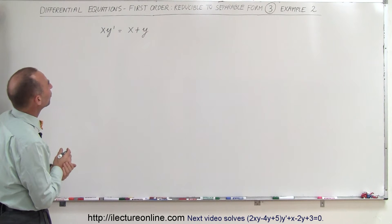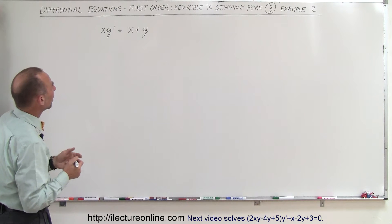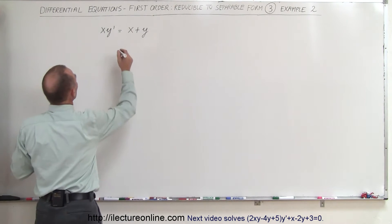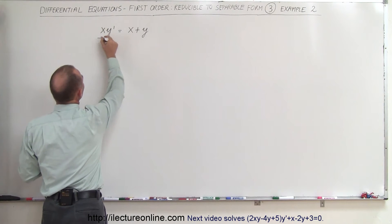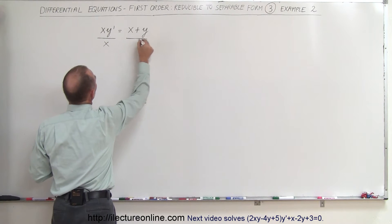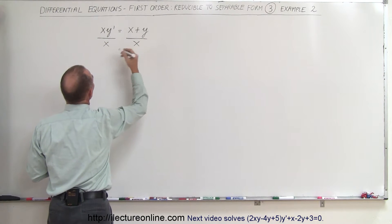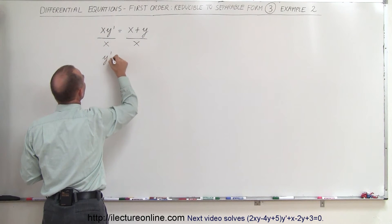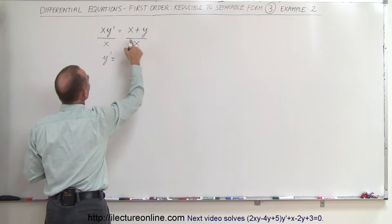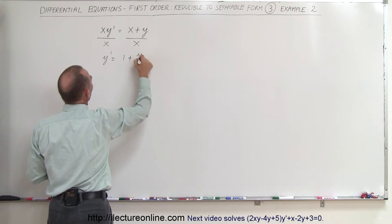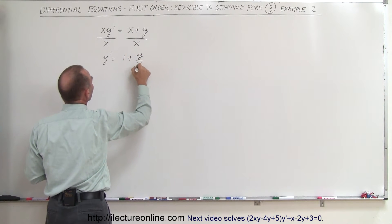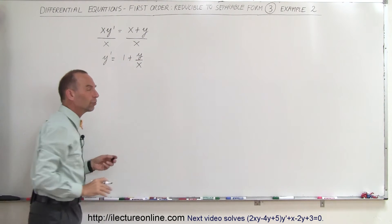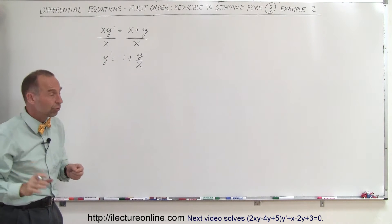The first thing we're going to do is divide both sides by x and see what we get. When we divide the left side by x and the right side by x, we get y prime is equal to 1 plus y over x. Now we can make a substitution for that y over x.